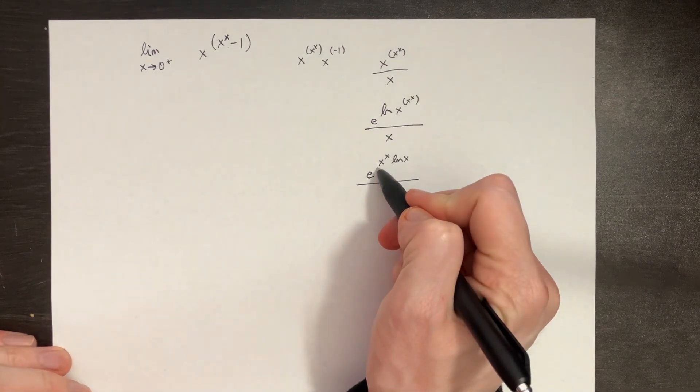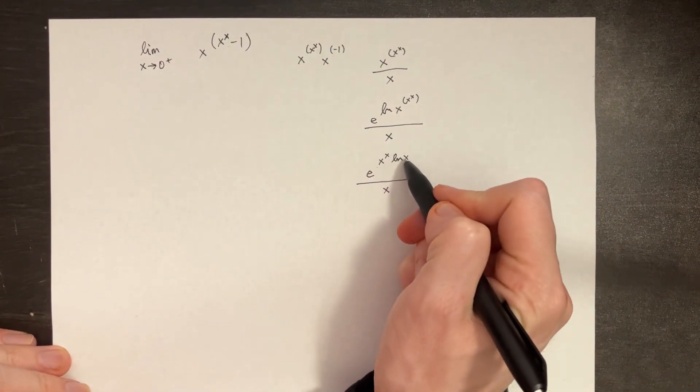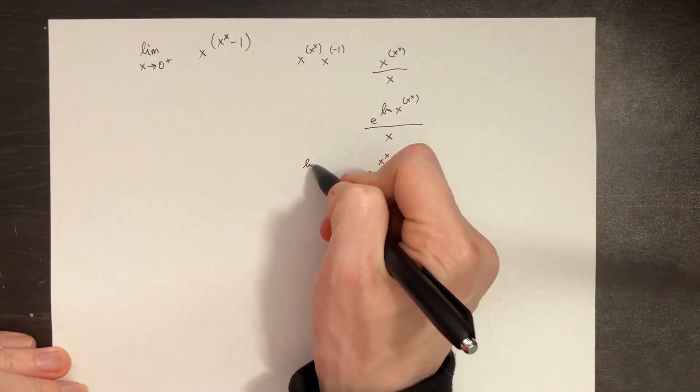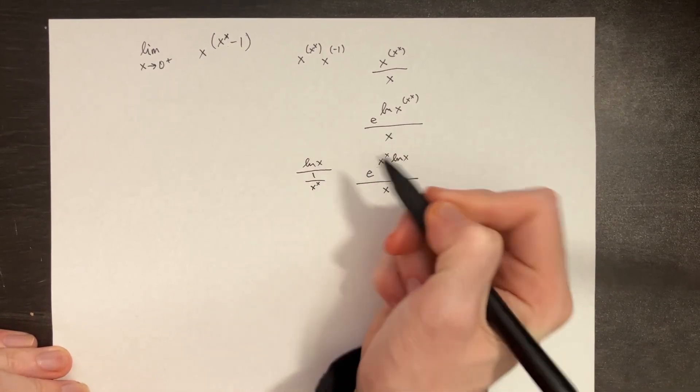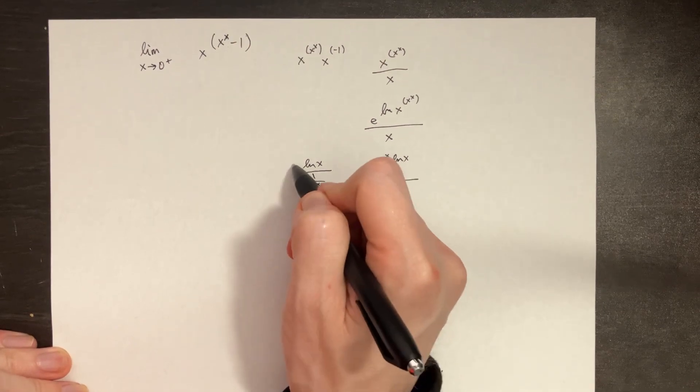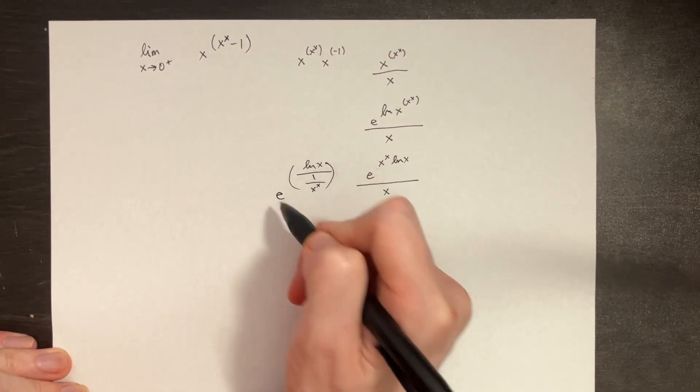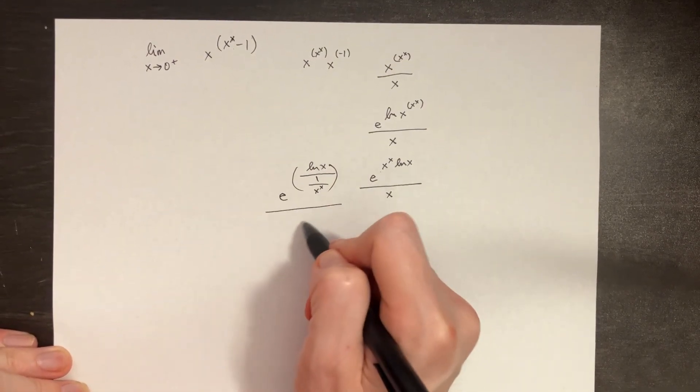Now usually when we have something like this times that, we can rewrite it by saying something like ln of x divided by 1 over x to the power of x, and then we have all this to the power of e over here, all over x.